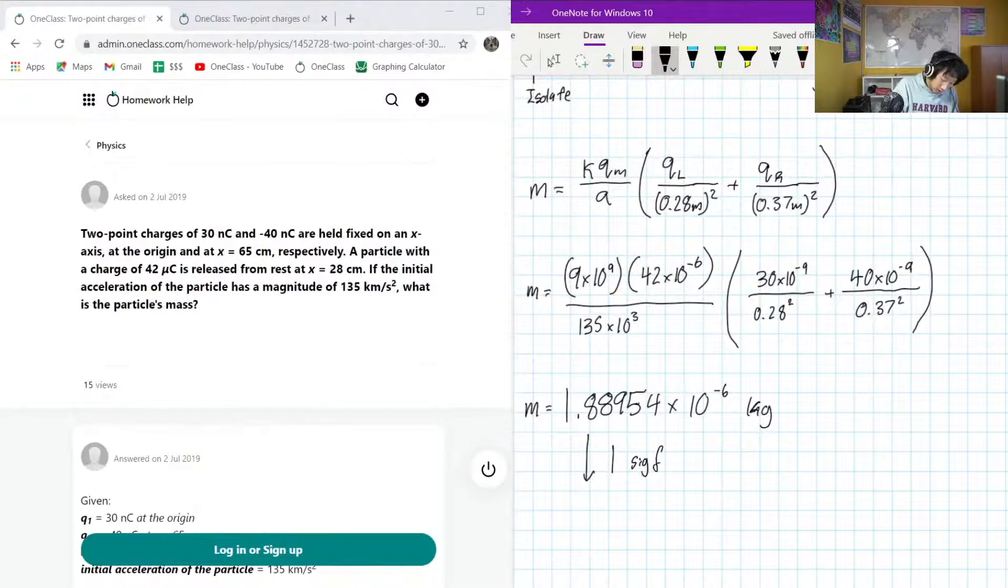1 sig fig. So, our M will just be 2 times 10 to the negative 6 kilograms. Another way that we could say this is 2 milligrams. Okay? Because 10 to the negative 6 times 10 to the 3 is 10 to the negative 3, because the kilo turns into 10 to the 3. So, it becomes 2 milligrams. Okay? So, this is the mass of the particle.